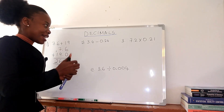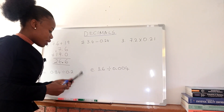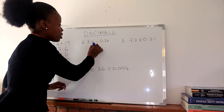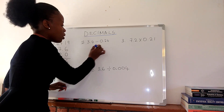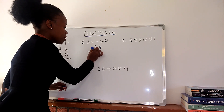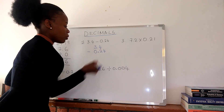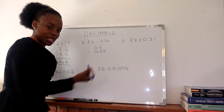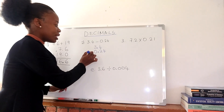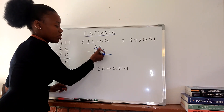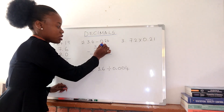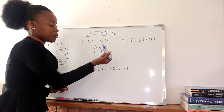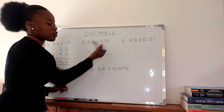We have 3.4 minus 0.24. Make sure that your decimals are along the line. We write 3.4 as 3.40, so that both numbers have the same number of decimal places. We are subtracting, so 0 minus 4 — you know you can't subtract 4 from 0.